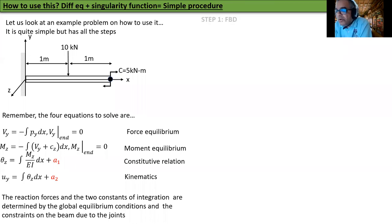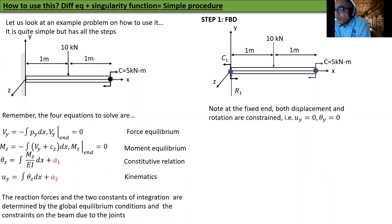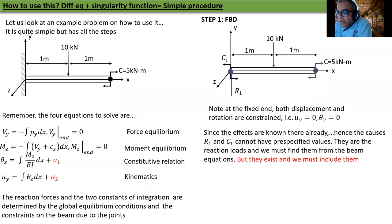Step one: draw a free body diagram. You can see there is a force R1 at x equal to zero pointing upwards and a counterclockwise moment C1 at x equal to zero. The other external forces are already shown. When I draw the unknown forces, I automatically assume them to be in the same direction as the global axis.